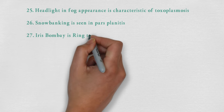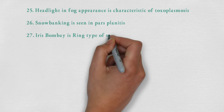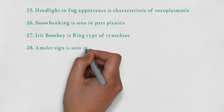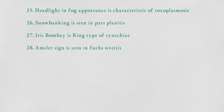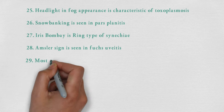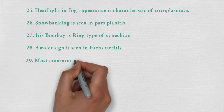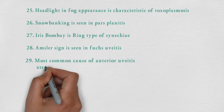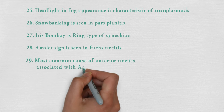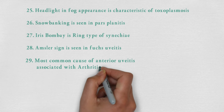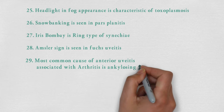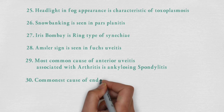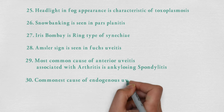Iris bombae is a ring type of synechia. Macelar synechia is seen in Fuchs' uveitis. Most common cause of anterior uveitis associated with arthritis is ankylosing spondylitis. Commonest cause of endogenous uveitis in India is tuberculosis.